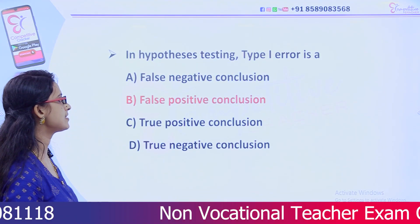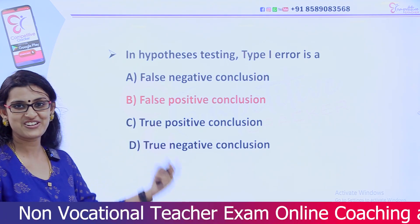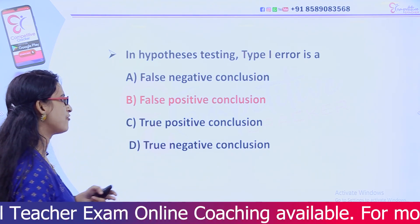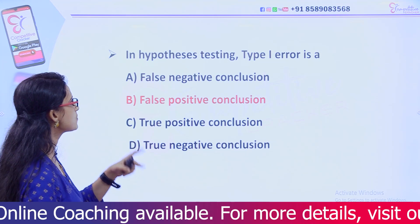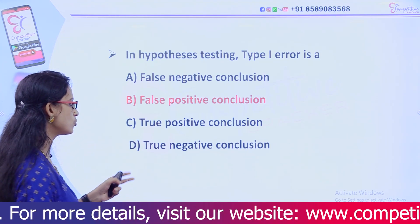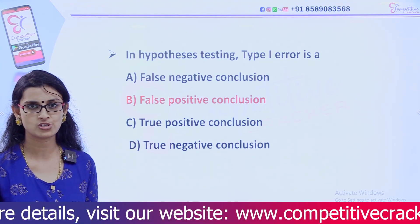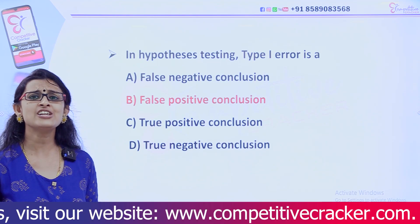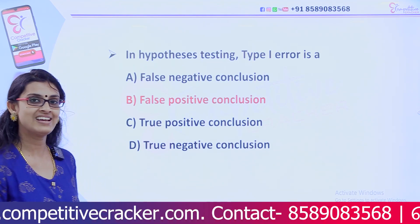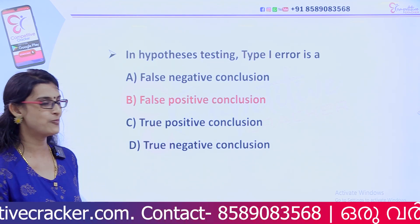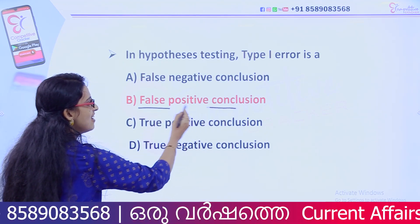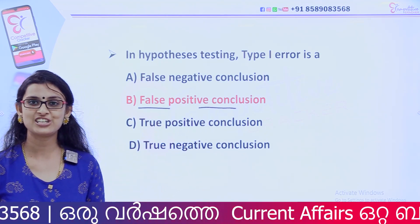In hypothesis testing, Type 1 error — already discussed. The options include False Negative Conclusion, False Positive Conclusion, True Positive Conclusion, and True Negative Conclusion. When the null hypothesis is correct but we consider it wrong, we make a false positive conclusion — that is the Type 1 error.